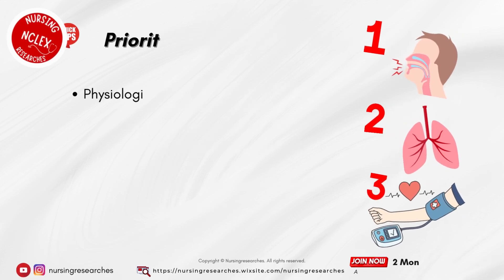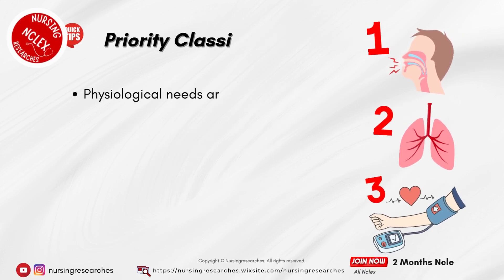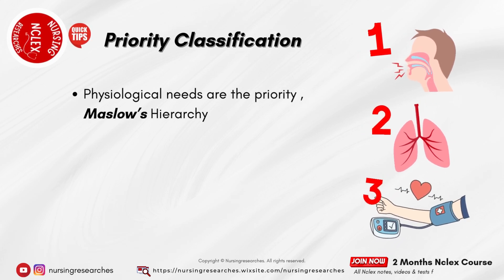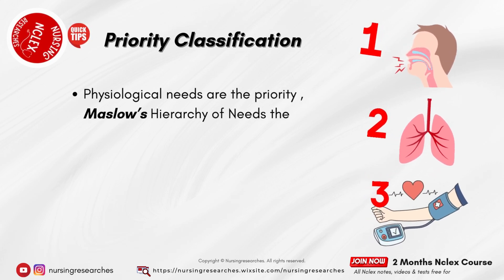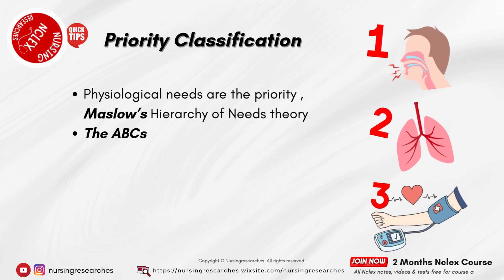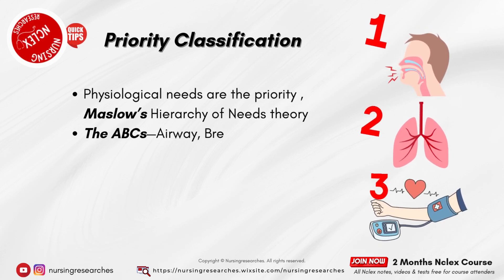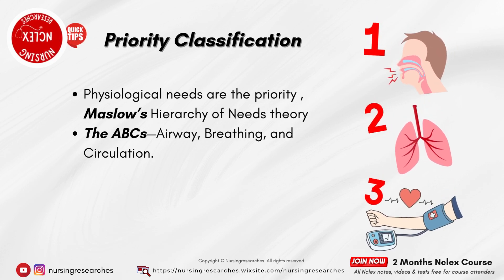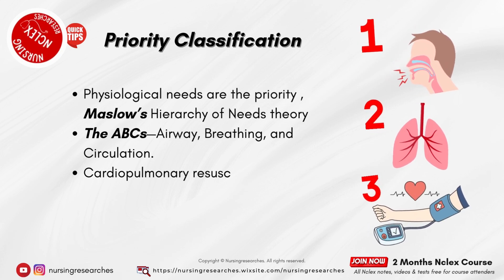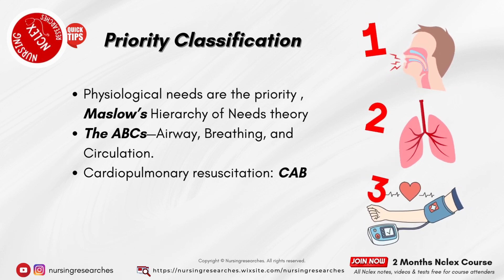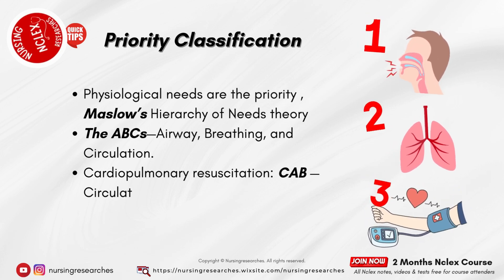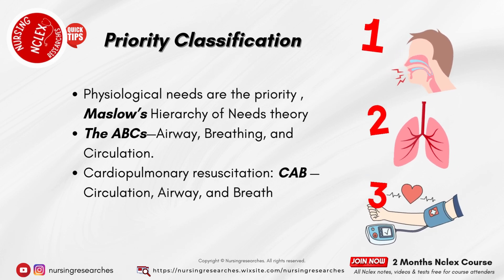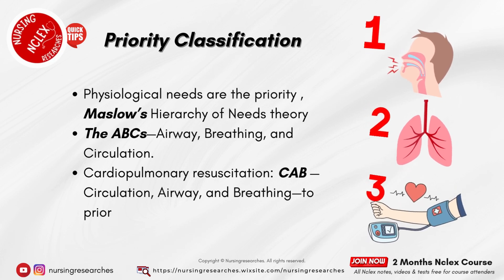Physiological needs are the priority — Maslow's hierarchy of needs theory. The ABCs: airway, breathing, and circulation. For cardiopulmonary resuscitation, CAB: circulation, airway, and breathing to prioritize.